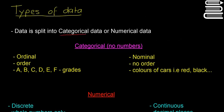So data can either be categorical or numerical. So first we're going to talk about categorical. So categorical data means there are no numbers, that's the important thing. And it can be split up into two separate things, into ordinal or into nominal.